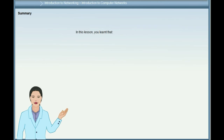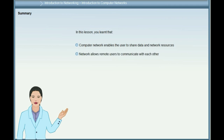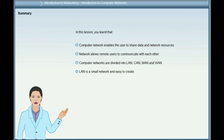In this lesson, you learnt that a computer network enables users to share data and network resources. Network allows remote users to communicate with each other. Computer networks are divided into LAN, CAN, MAN and WAN. LAN is a small network and easy to create. The OSI model has seven layers and provides standards for communication.